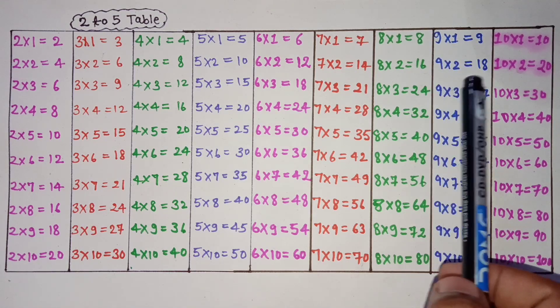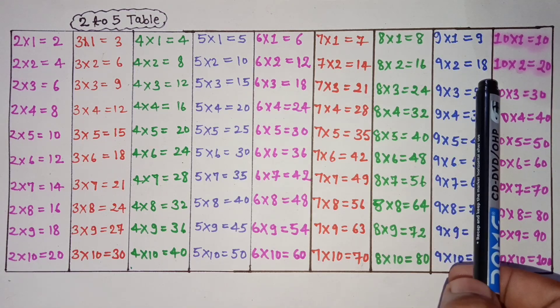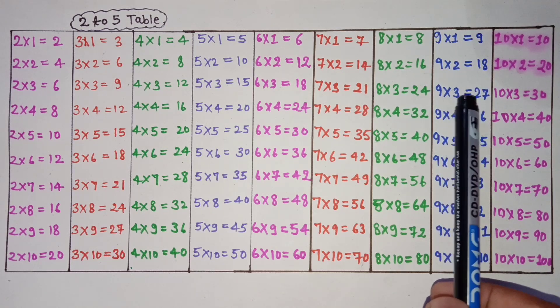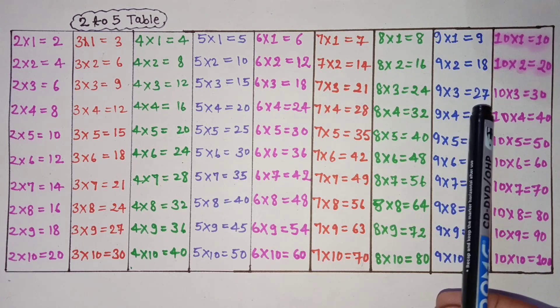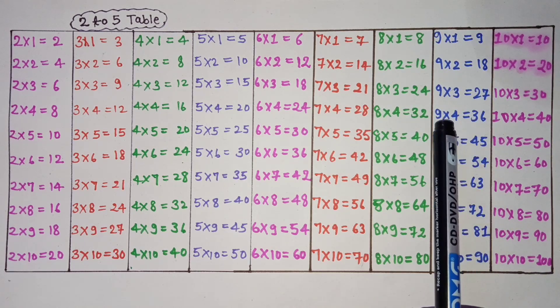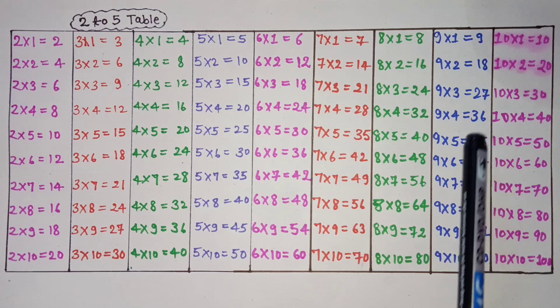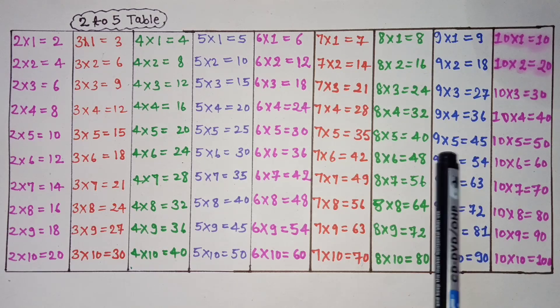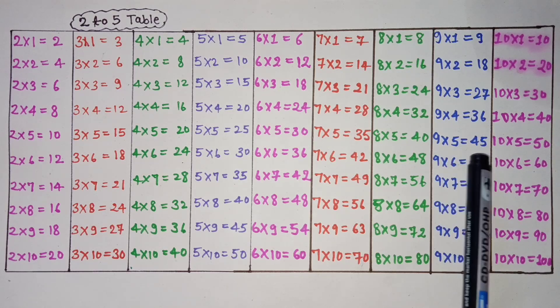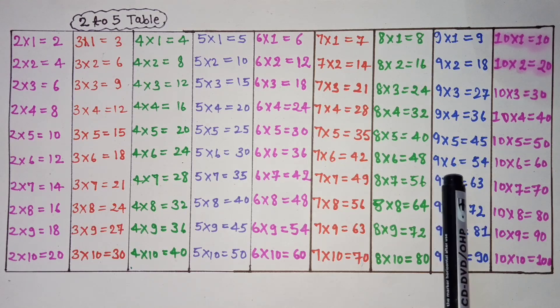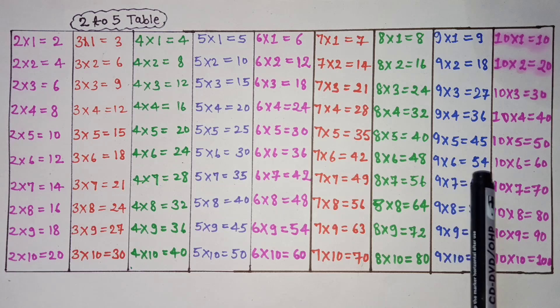9 2s are 18, 9 3s are 27, 9 4s are 36, 9 5s are 45, 9 6s are 54.